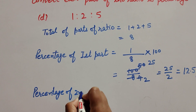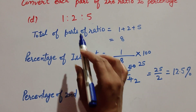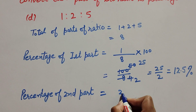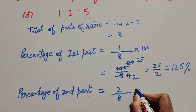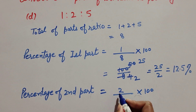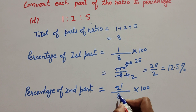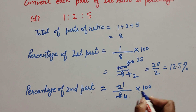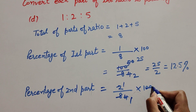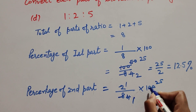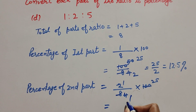Now we find the percentage of the second part. Percentage of second part is equal to the second part — which is two — over the total parts — which is eight — multiplied by one hundred. Two and eight are both divisible by two, so we cancel them: two ones are two, two fours are eight. Then four and one hundred are both divisible by four, so we cancel them: four ones are four, twenty five fours are one hundred. So it is equal to twenty five.